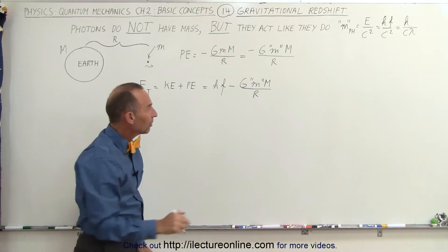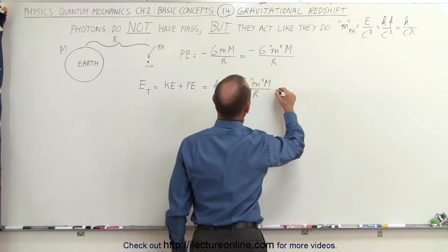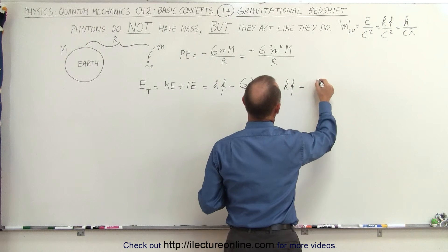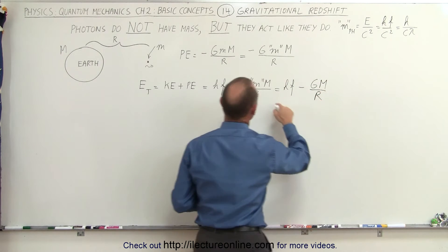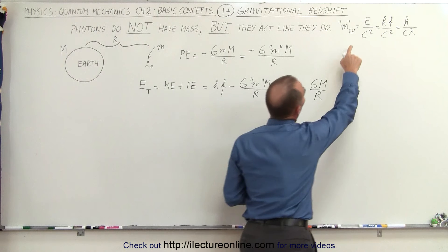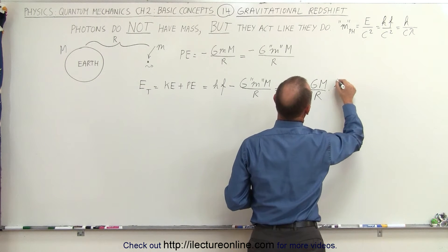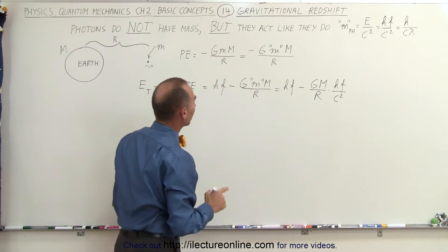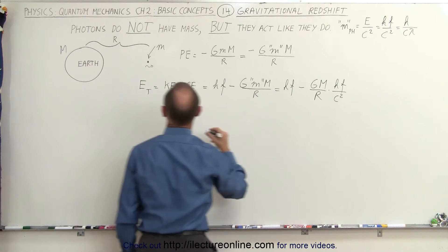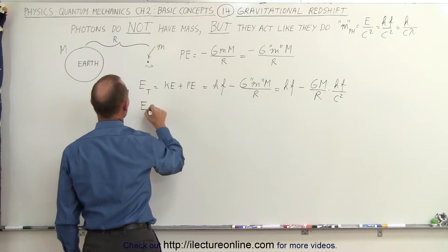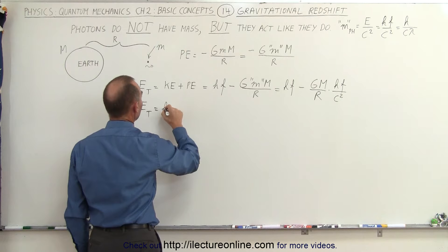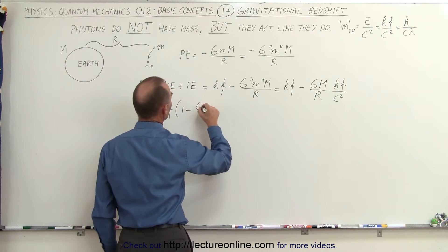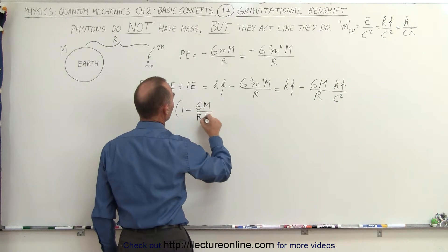If we replace the apparent mass of the photon with what it equals, we get hf minus G times (hf over c squared) times M over r. Factoring out hf, the total energy of a photon can be written as hf times (1 minus GM over rc squared).